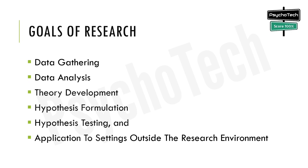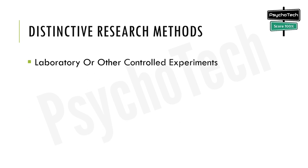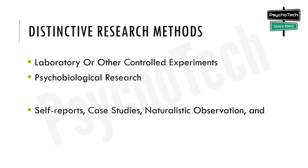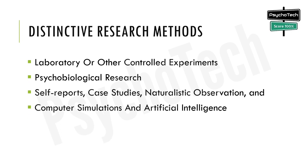Researchers seek ways to explain cognition as well as describe it. To move beyond descriptions, cognitive psychologists must infer from what is observed directly. They use various methods to explore how humans think, including laboratory or other controlled experiments, psychobiological research, self-reports, case studies, naturalistic observation, and computer simulations and artificial intelligence.